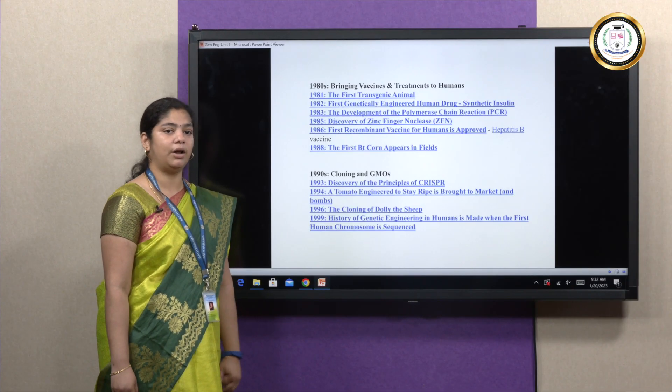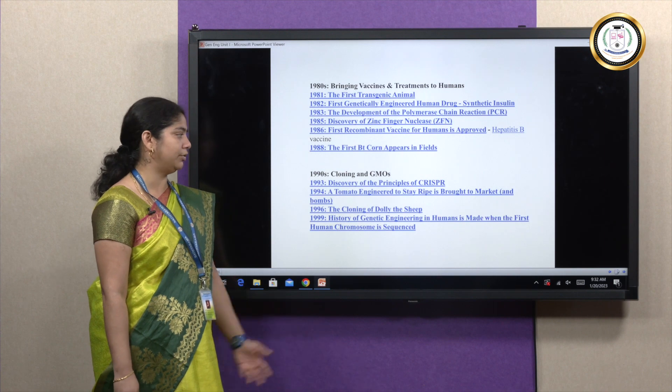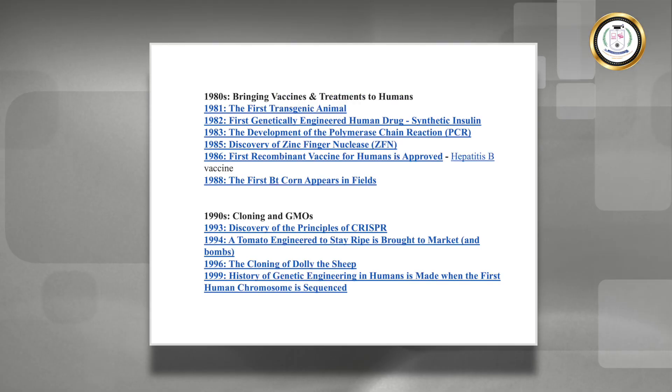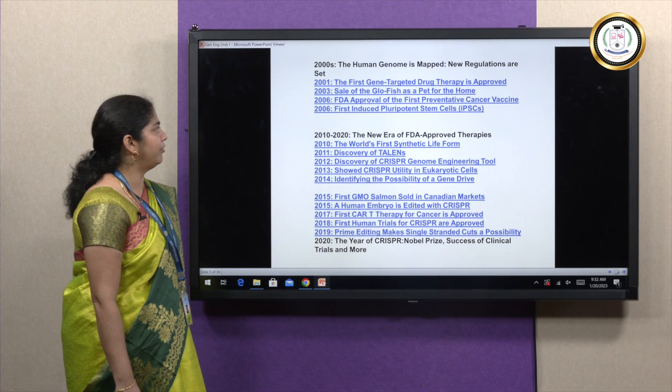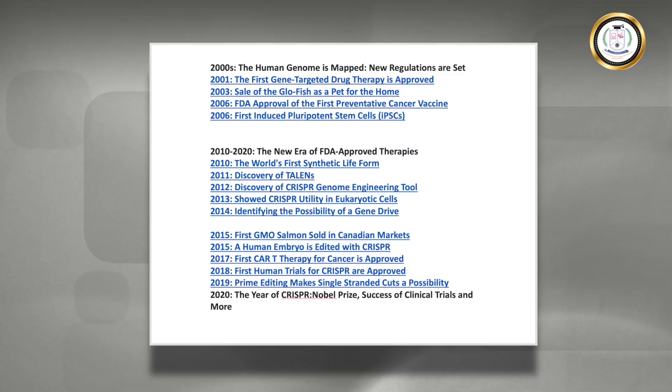By 1990s we are now more advanced where we were able to clone and produce genetically modified organisms. By the time of 2000s we can see there is a new drug that can be made only because of the new discovery of the whole genome sequence of human.